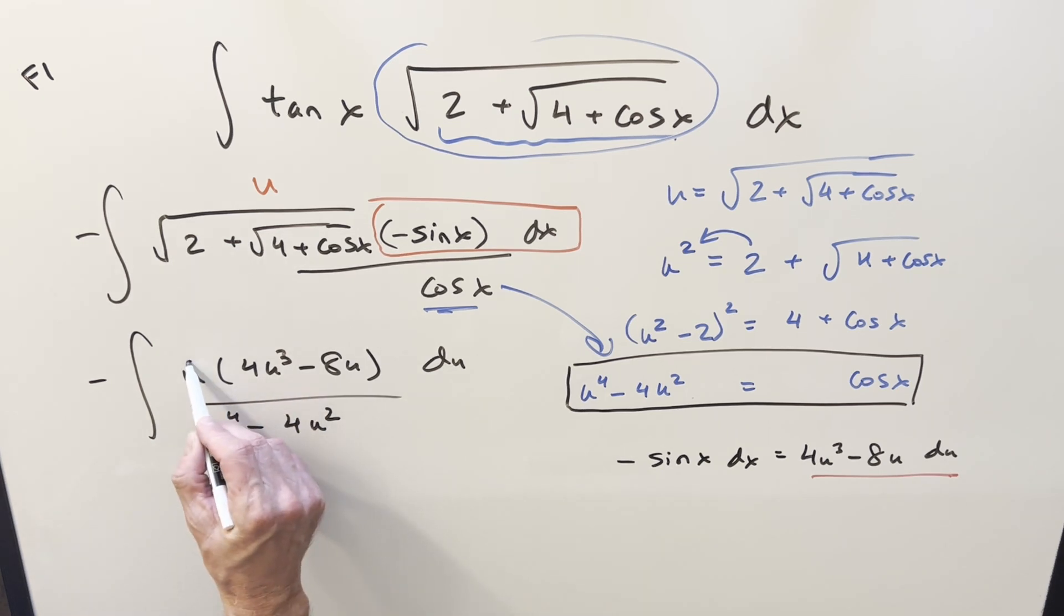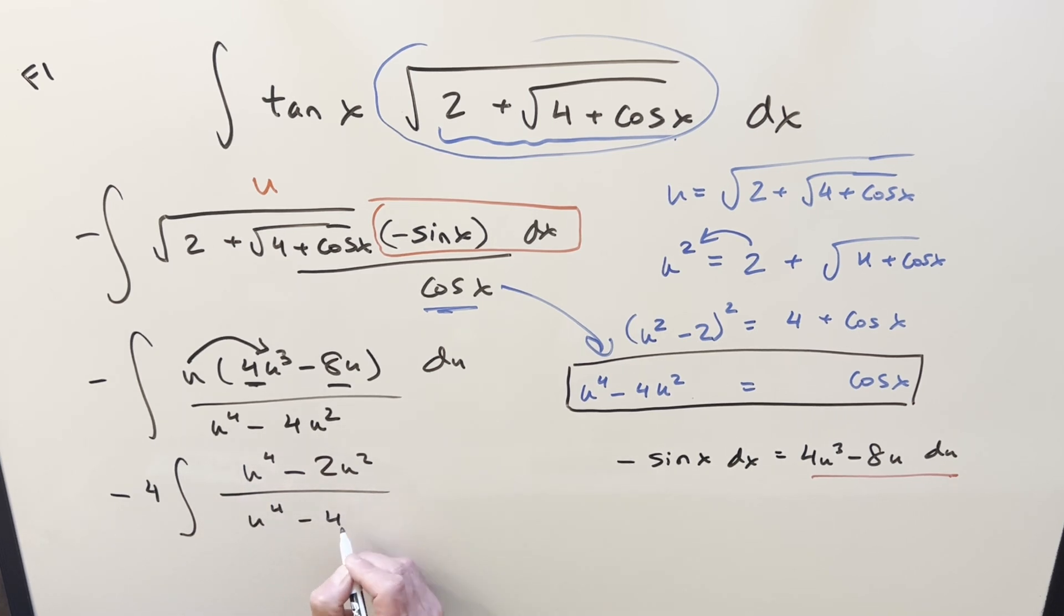Then from here, I can multiply in the u. And I also can factor a 4 out of this. So when I do that, we have minus 4 in front of the integral. The numerator becomes u to the fourth minus 2u squared now, all over the same denominator, u to the fourth minus 4u squared.